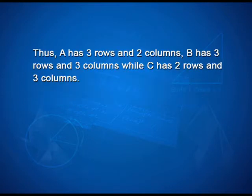Thus, matrix A has 3 rows and 2 columns, B has 3 rows and 3 columns, while C has 2 rows and 3 columns.